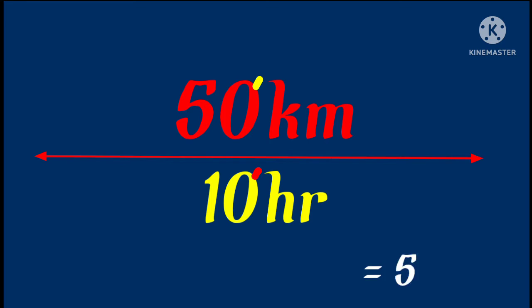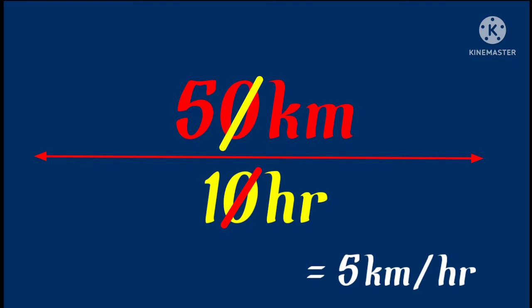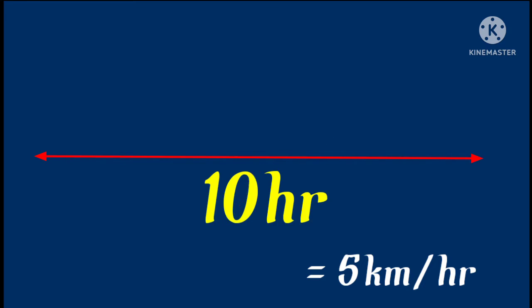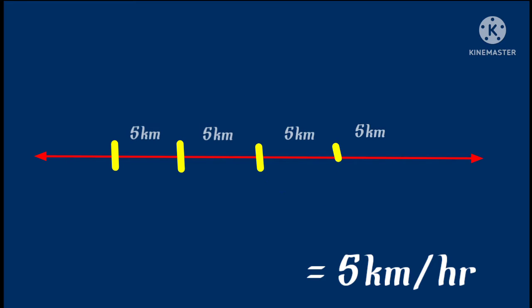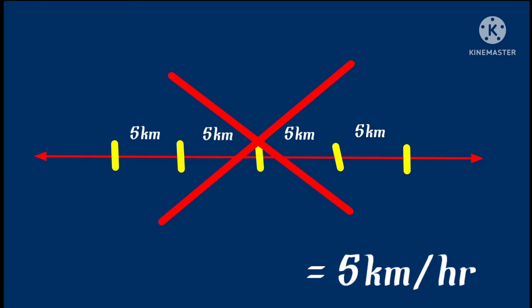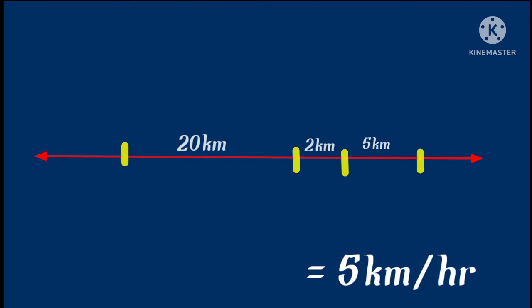50 divided by 10 gives us 5 kilometers per hour. But does this mean the car is covering exactly 5 kilometers every hour? No — because maybe sometimes the car is going fast and sometimes slow. That is why we use average speed, not just speed.